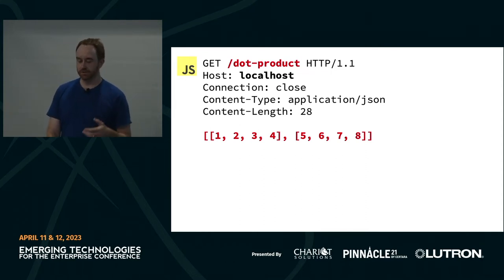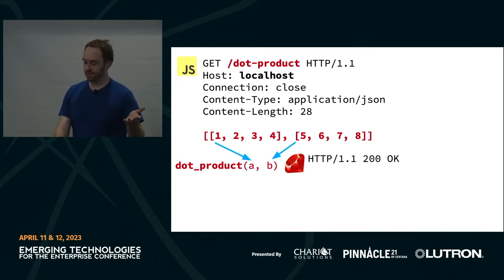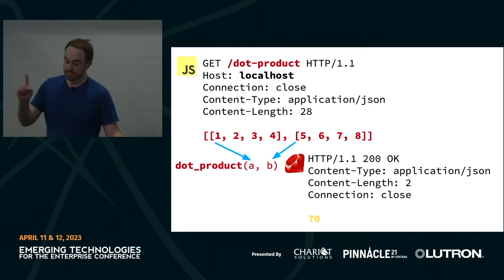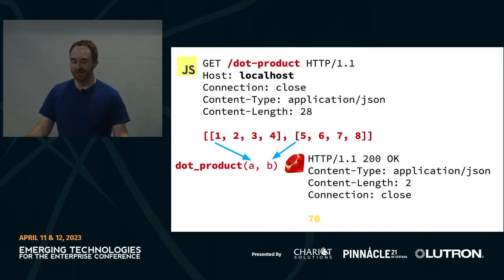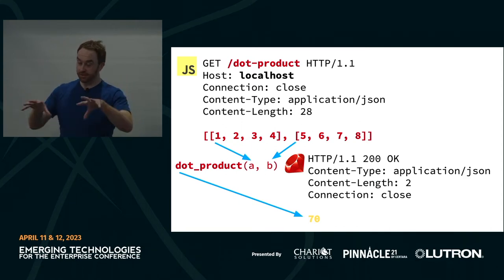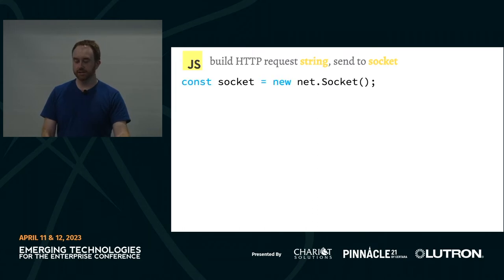The Ruby server receives this, calls dot product on those two arrays, and sends back a response — hopefully 200 OK — with the answer, which turns out to be 70. We successfully called a function in another programming language. Now let's look at the actual Node.js code that builds those strings and sends them across the socket. We open a socket with socket.connect, port 3000, localhost, build our request string using a buildHTTPRequest function, and then call socket.write.